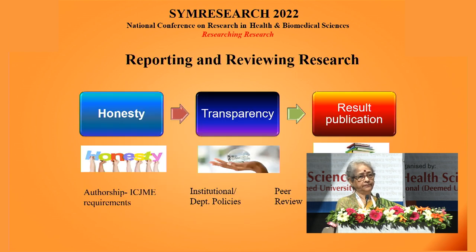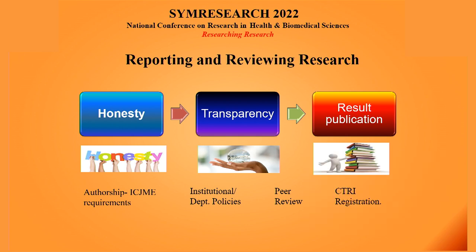You have to be honest and transparent about the research, and then you come out with outcomes — reaching the stage for publication. For publication, authorship issues arise. Generally, ICMR guidelines say you have to follow ICJME. But that may not give you all the answers. For instance, there was a case in India with 256 centers and 256 authors — how do you list them? Nobody gives guidelines on that. Alphabetical order is the best option, though 256 people can still fight for it. You have institution and department policies, international guidelines, and peer review itself has its problems. There is also CTRI registration.